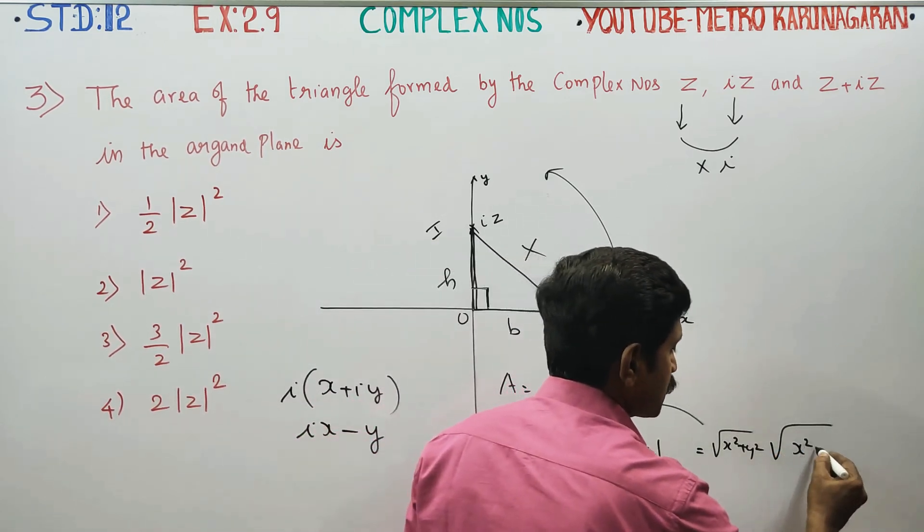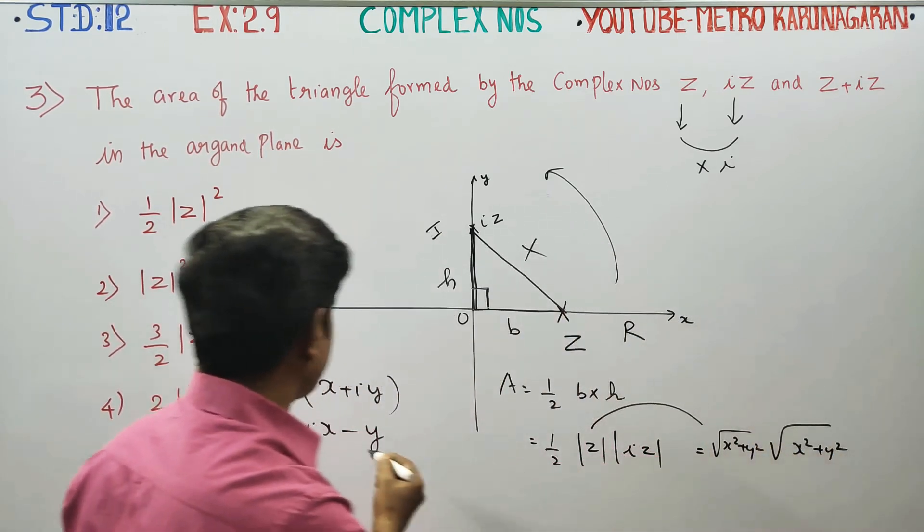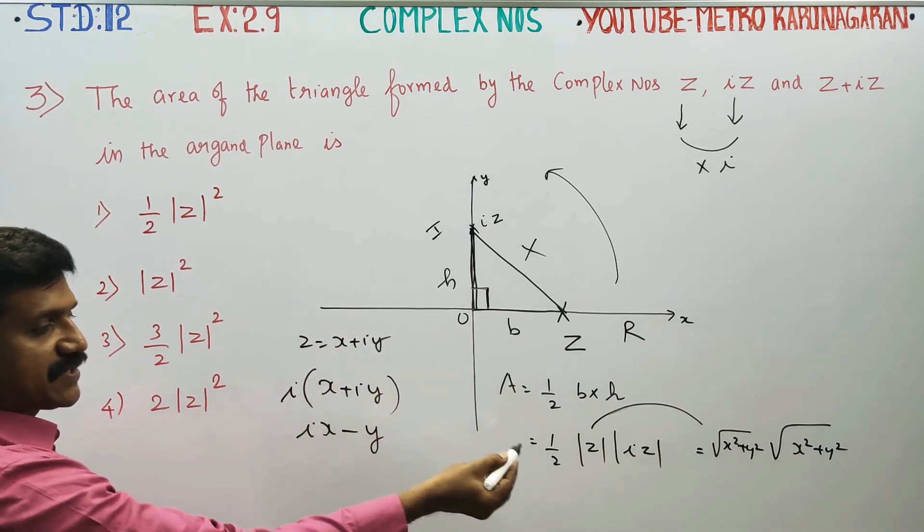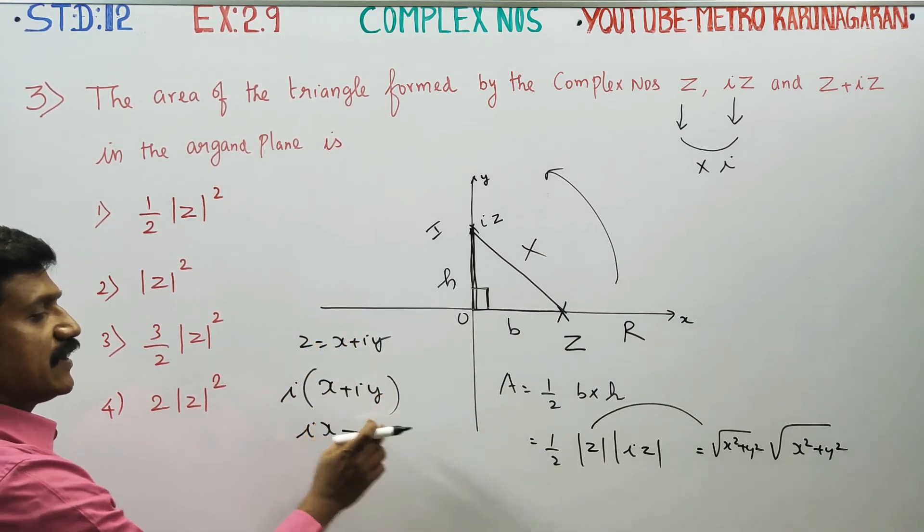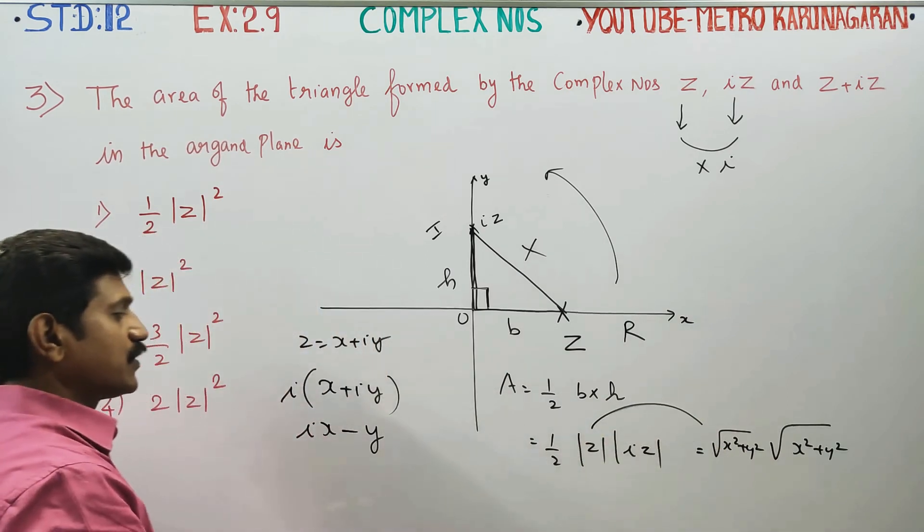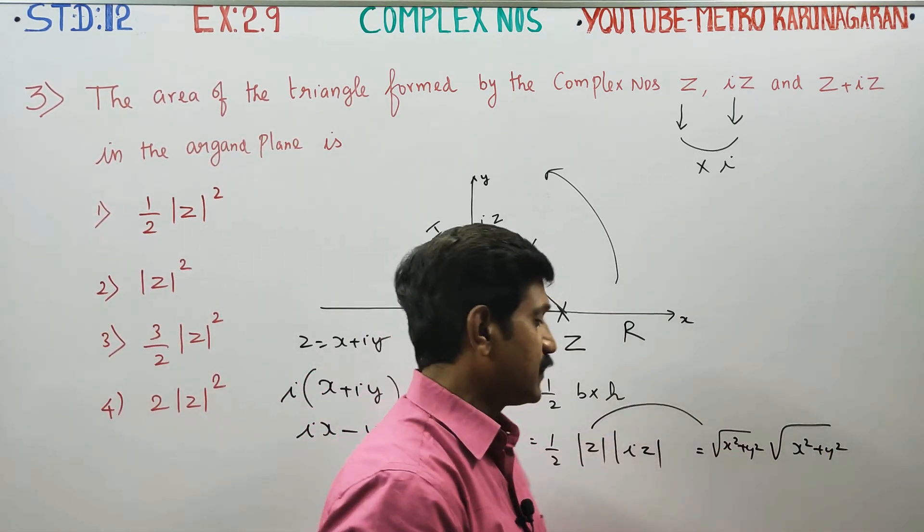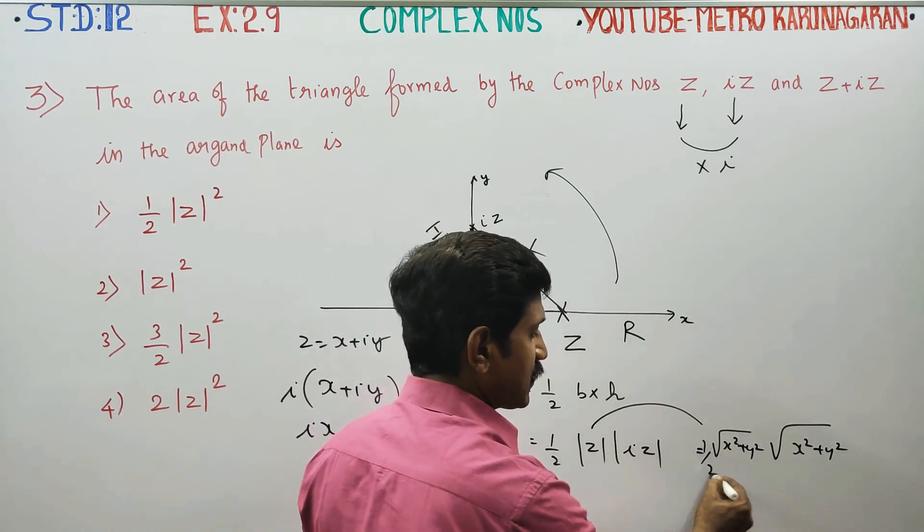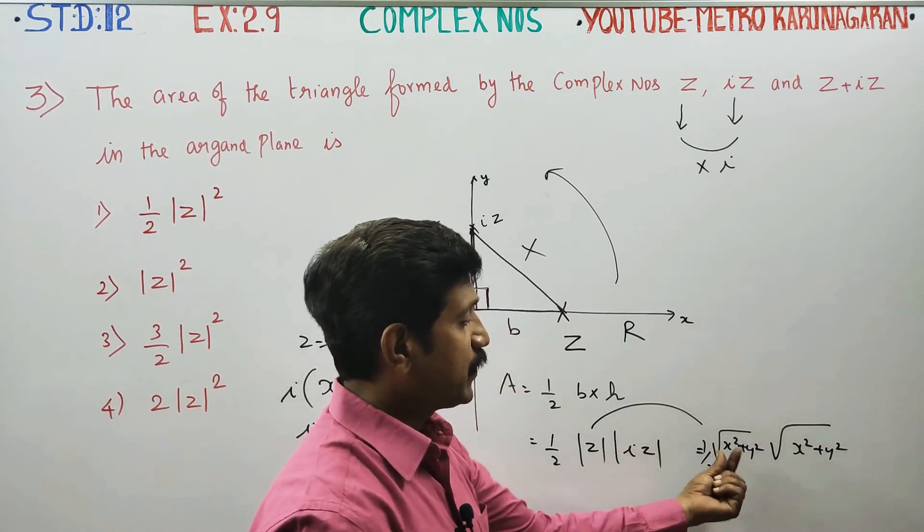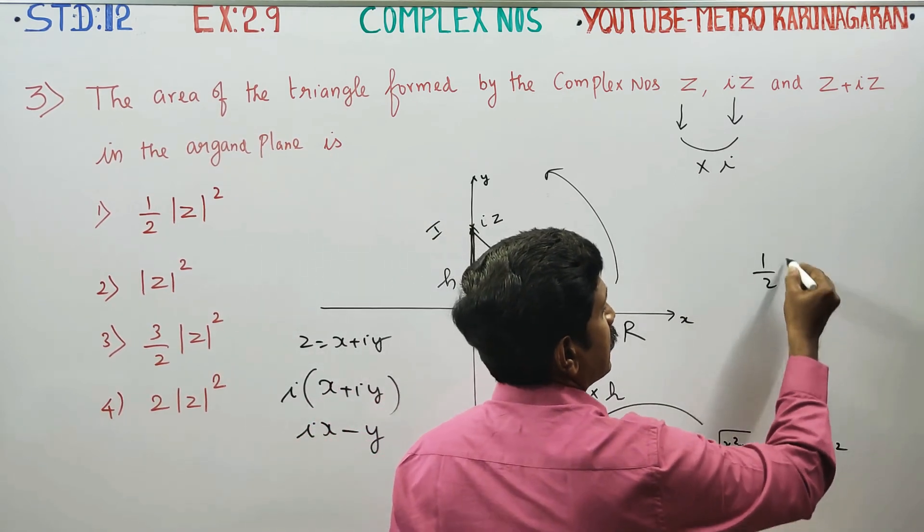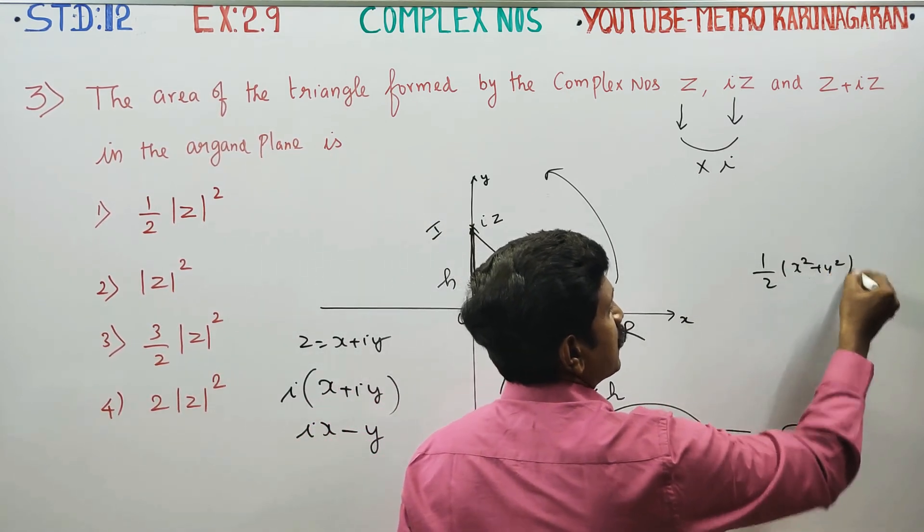If i squared is minus 1, half times square root of x square plus y square, square root of x square plus y square. That is one of them.